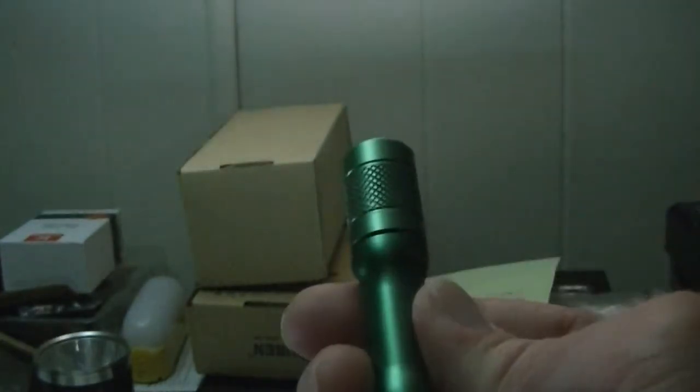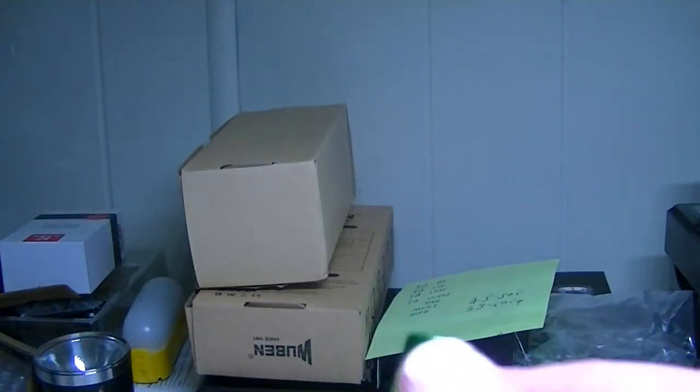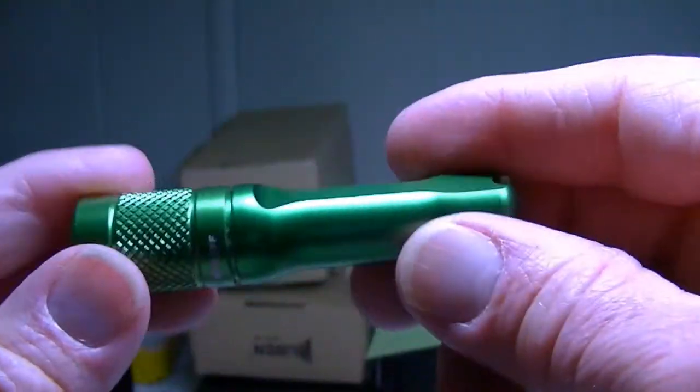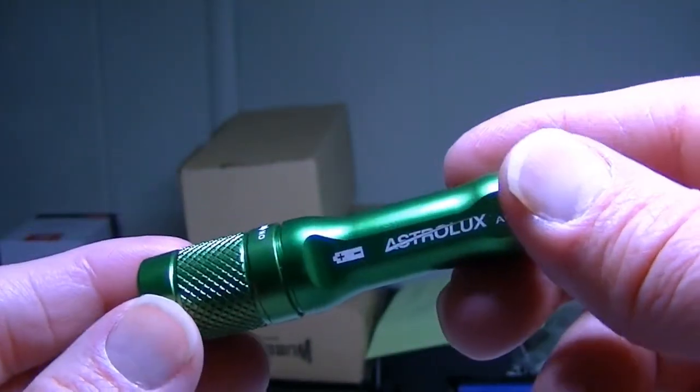But this is a nice little light - doesn't do anything terribly fancy, doesn't pretend to. It has three modes plus strobe and it's very small, so there's not too much that you can ask from a light of this size. Keep it on a key chain and that's it. It is the Astrolux A01.